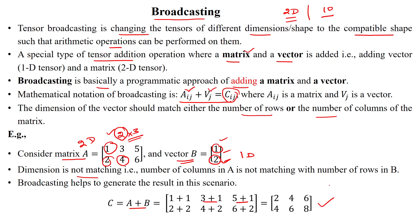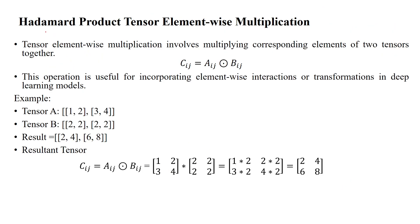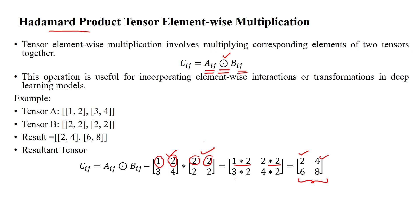There is also the Hadamard product, which can be performed using tensors. Here, element-wise multiplication is done. The Hadamard product is represented using the notation of a dot inside a circle between tensor A and tensor B. Element-wise multiplication is applied on the two tensors, both of 2 by 2 dimension. For example, 1 times 2 gives the first element, then in the first row second column, 2 times 2 gives 4. Like that, we perform the element-wise multiplication in the Hadamard product. This is the resultant tensor for the multiplication of two tensors.